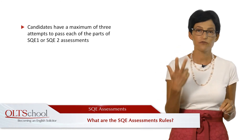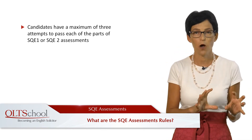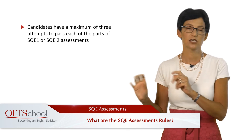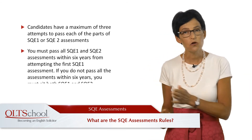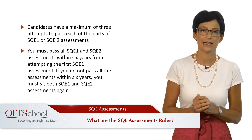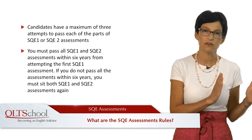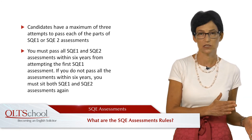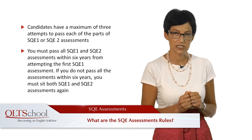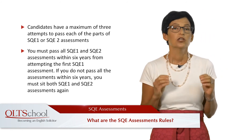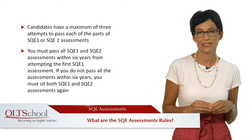Candidates have a maximum of three attempts to pass each of the parts of SQE1 or SQE2 assessments. You must pass all SQE1 and SQE2 assessments within six years from attempting the first SQE1 assessment. If you do not pass all the assessments within six years, you must sit both SQE1 and SQE2 assessments again.